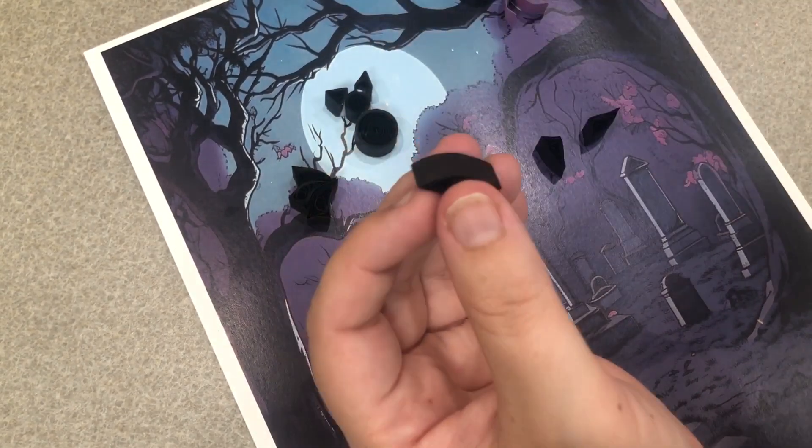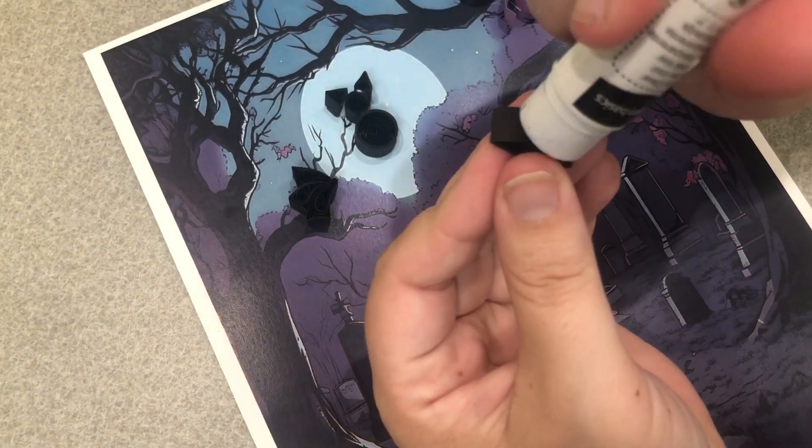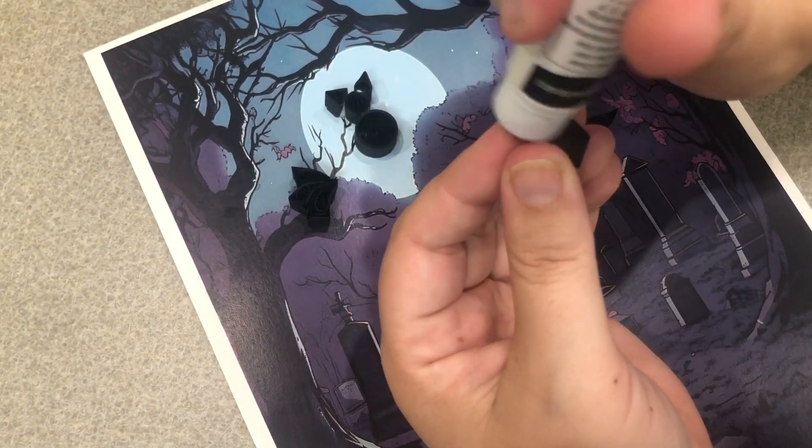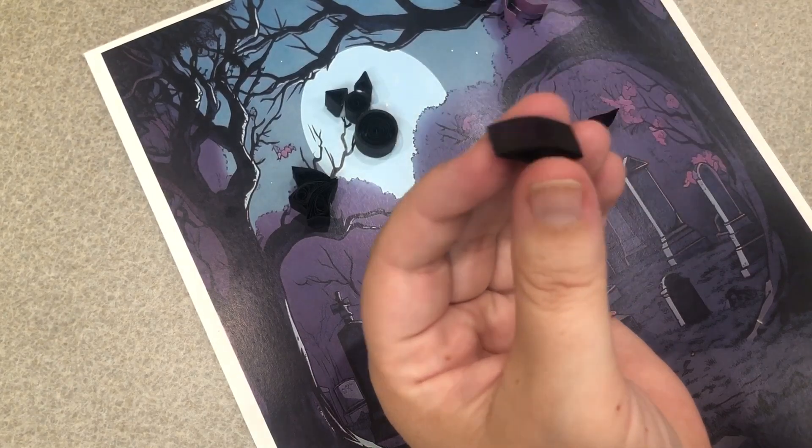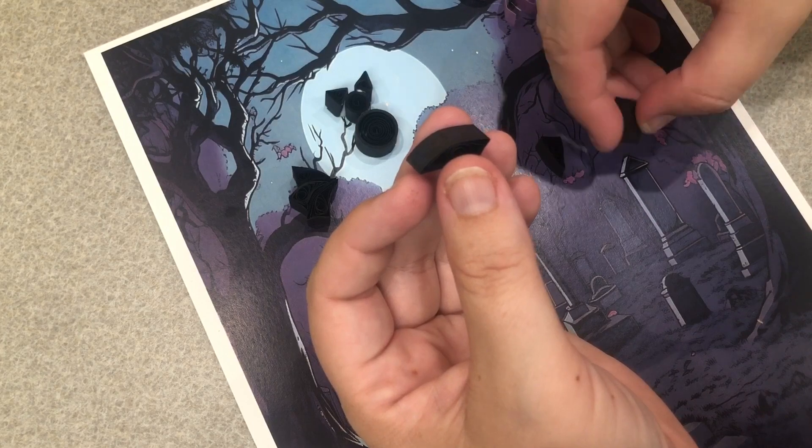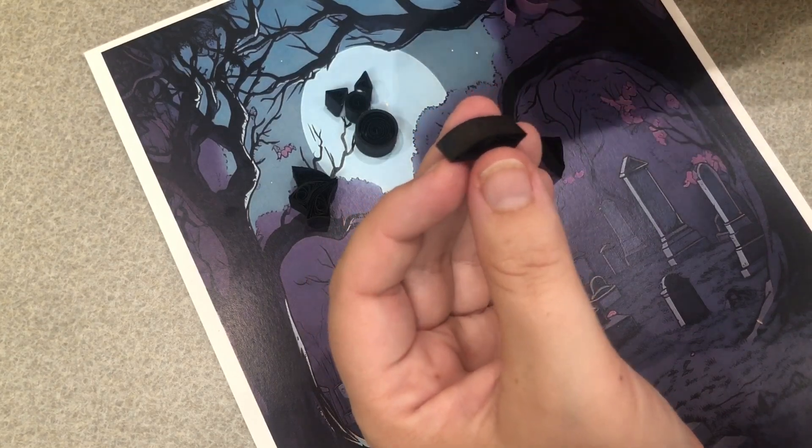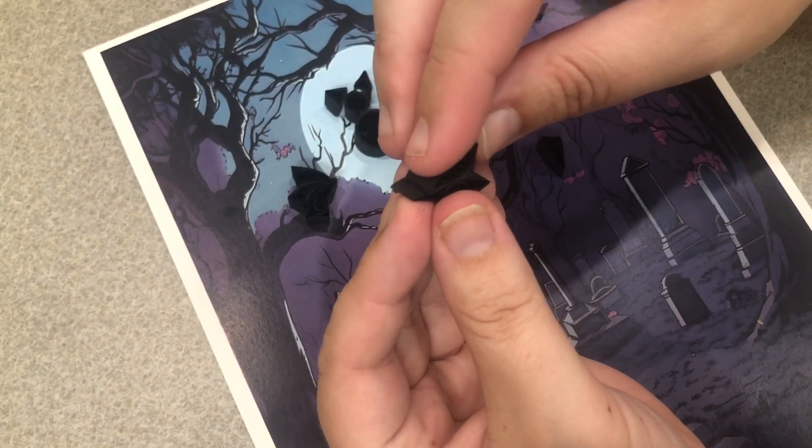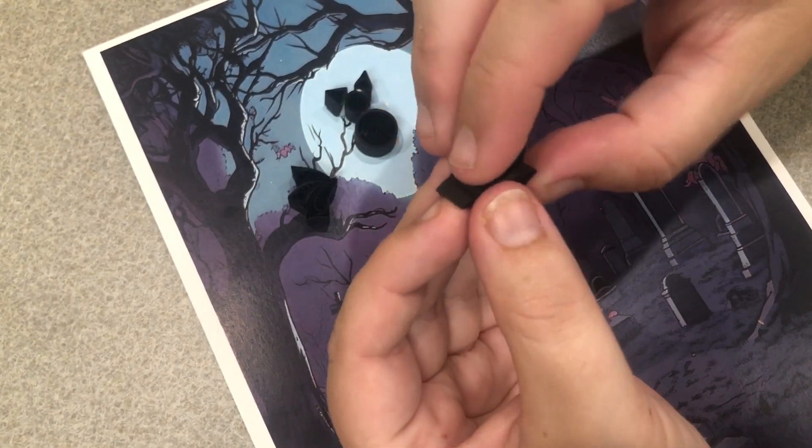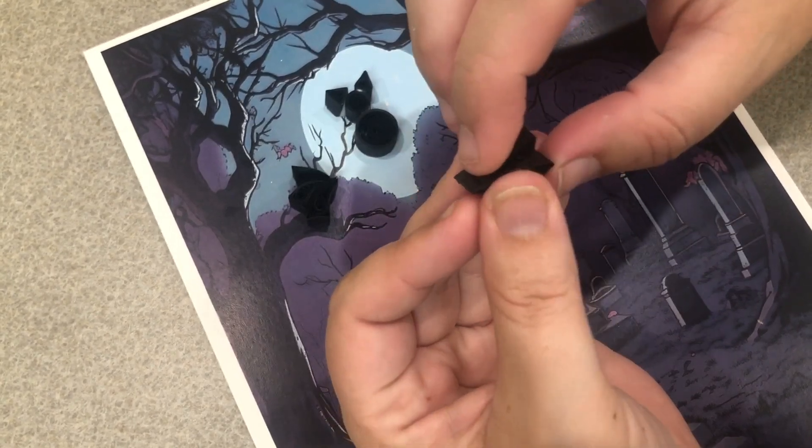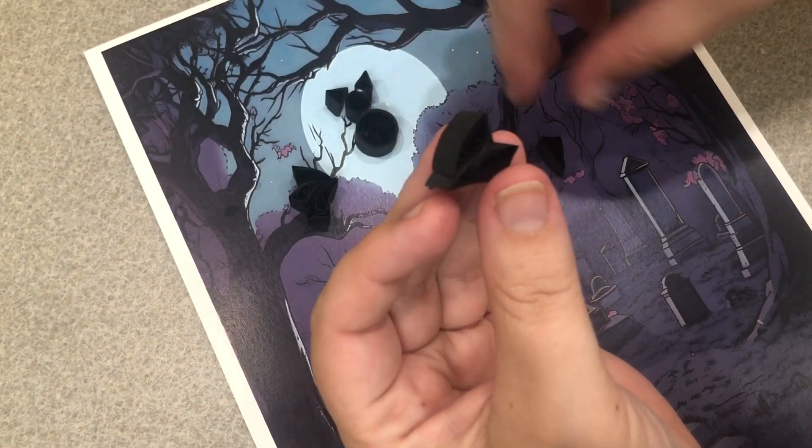So we'll start with putting some glue on the top rounded edge of our larger piece, the bottom one. And then we'll just stick our next piece onto that. It's not going to fill up the whole side, but that's fine.